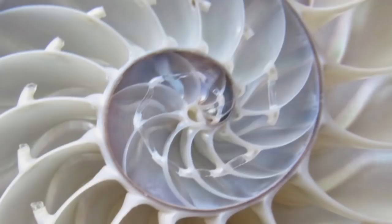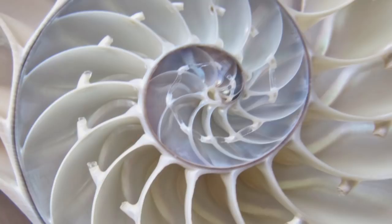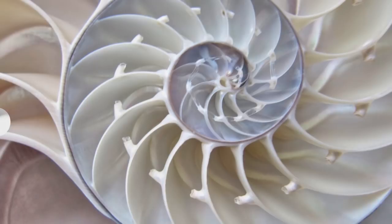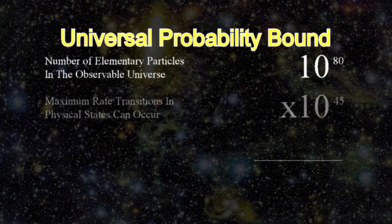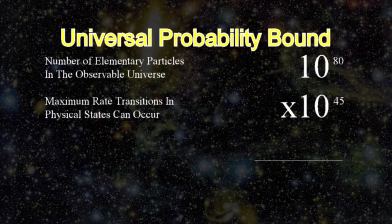He called this the universal probability bound — a degree of improbability below which a specified event of that probability cannot reasonably be attributed to chance, regardless of whatever probabilistic resources from the known universe are factored in. This was calculated by factoring in the number of elementary particles in the observable universe at 10^80, times 10^45, the maximum rate per second at which transitions in physical states can occur as established by the Planck length.